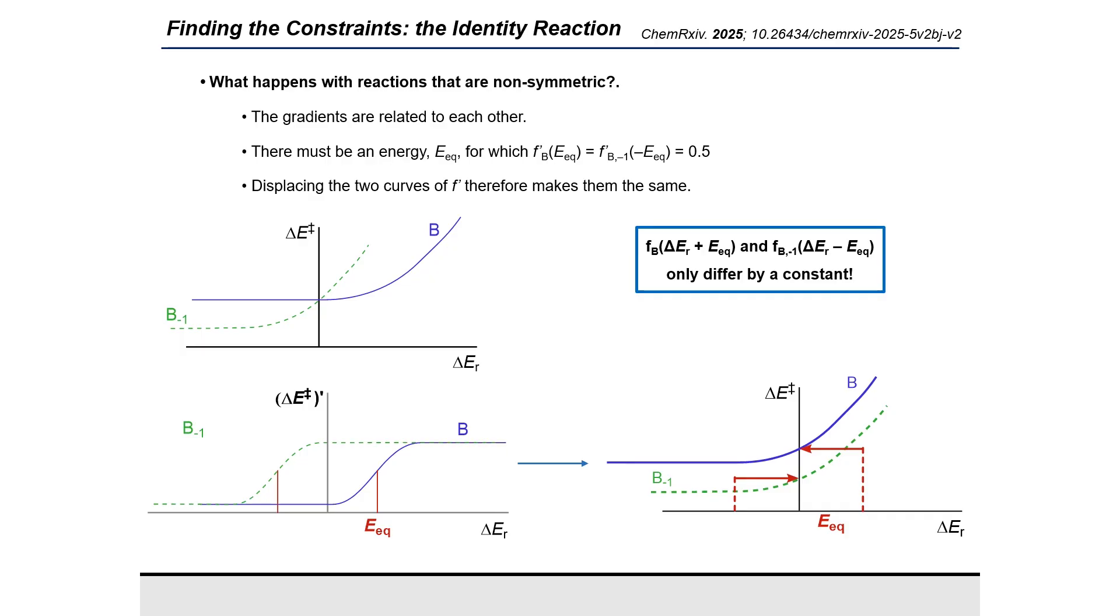Now, because we know the limits of both of these functions at positive and negative infinity, we can make those limits equal. And we can find that E_EQ is actually just the difference between the minimum pre-organization energy and the minimum reorganization energy. And this is how the asymmetry of a reaction can be defined.